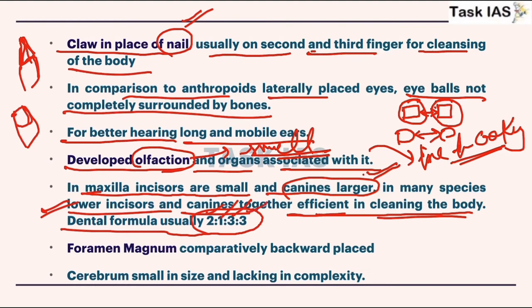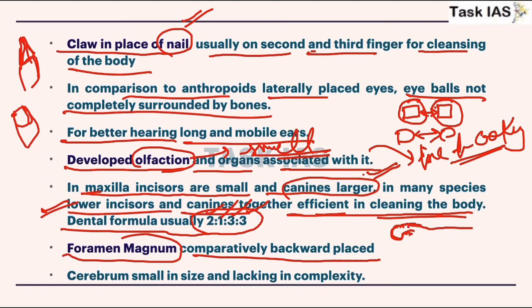Dental formula is 2.1.3.3 — that means two incisors, one canine, three premolars, and three molars. Foramen magnum is comparatively backward placed. Consider this: if there is a mouth and this is the neck of any primate, the lateral part is the post-cranium part.